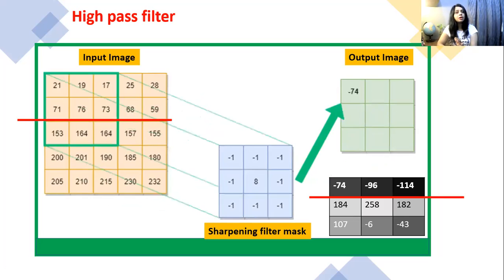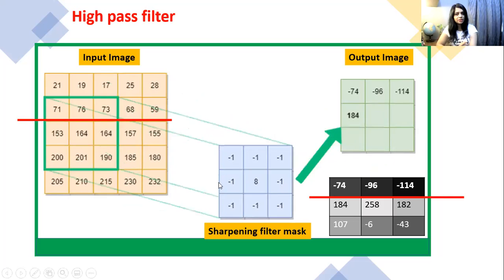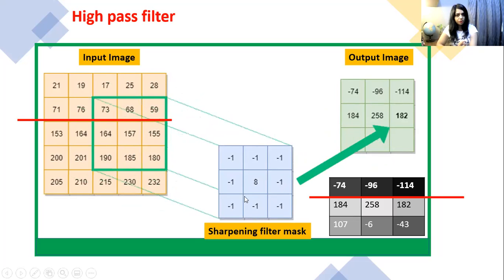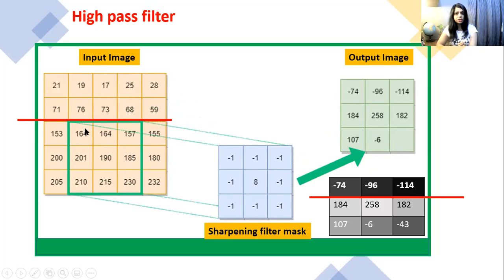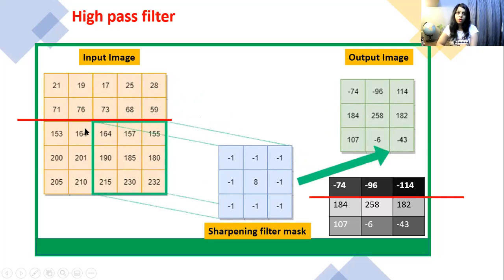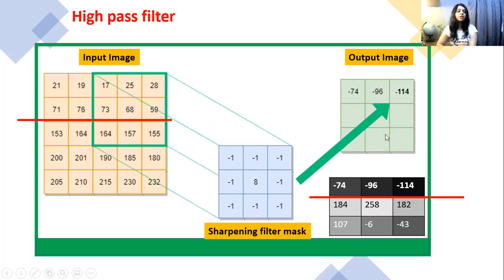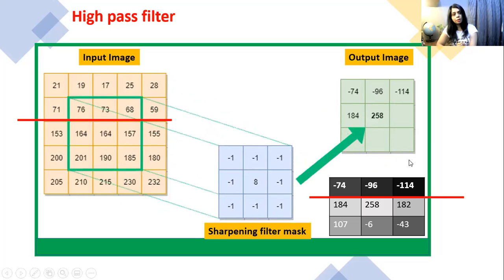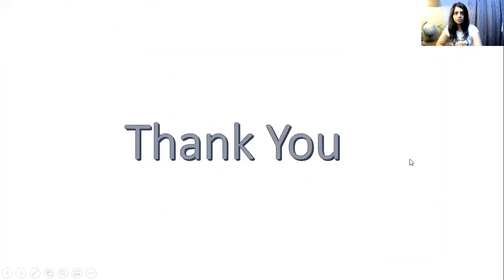High pass filter sharpens the image. The mask is shown here — you put this mask on the input image, convolve it, and replace the central pixel value with the new pixel value, and you will get a sharpened high pass filter image. Thank you very much, thanks for watching.